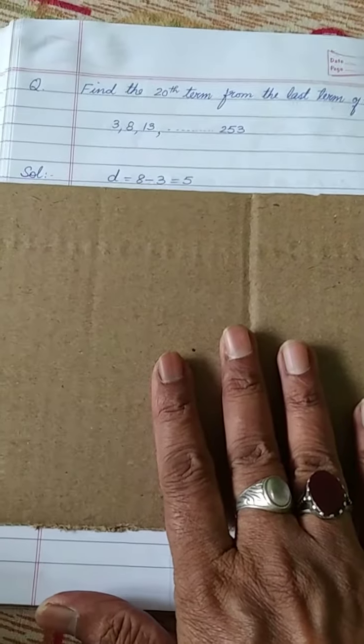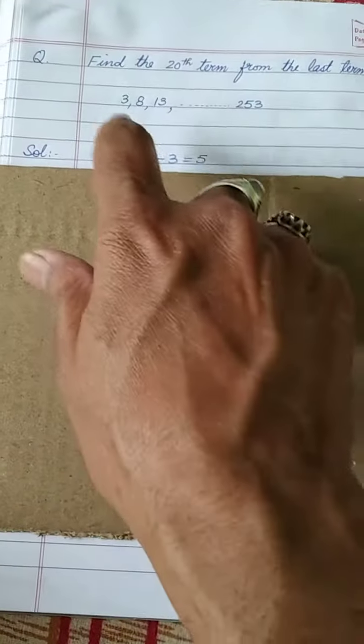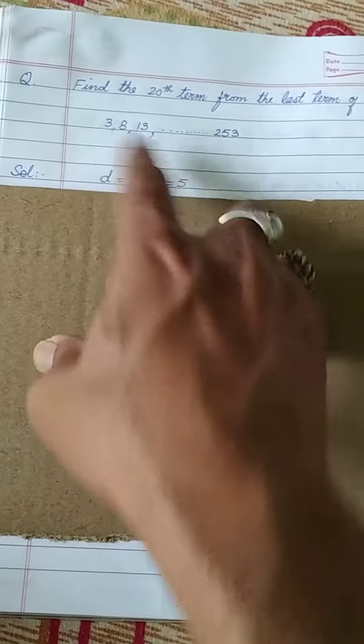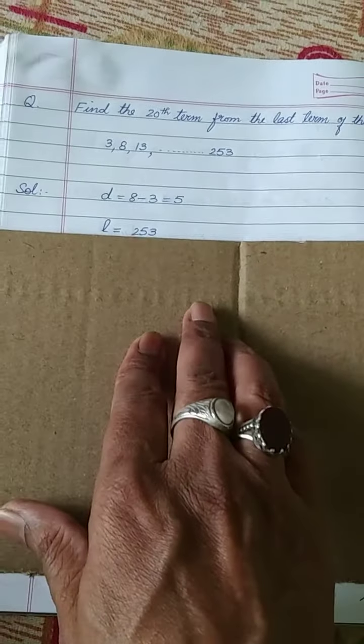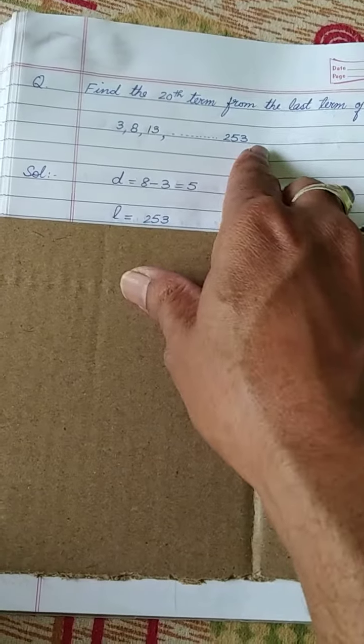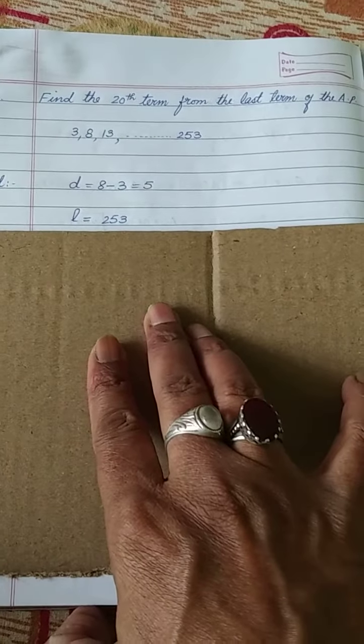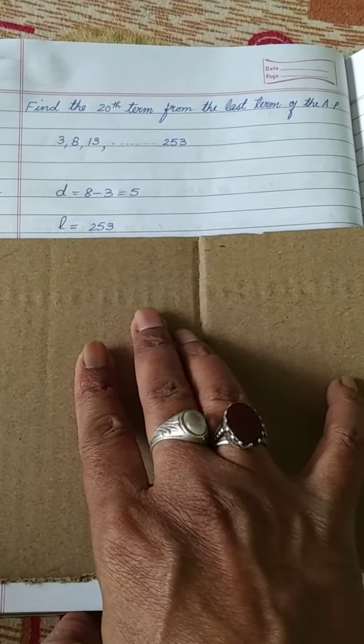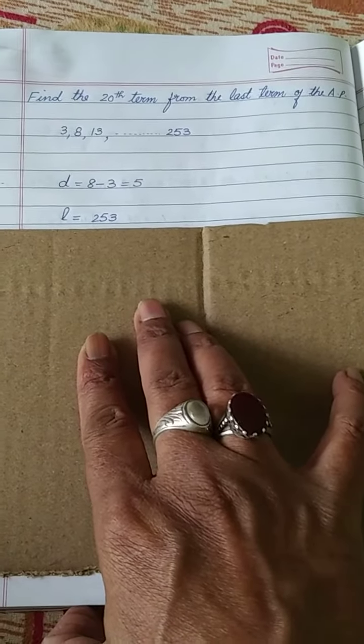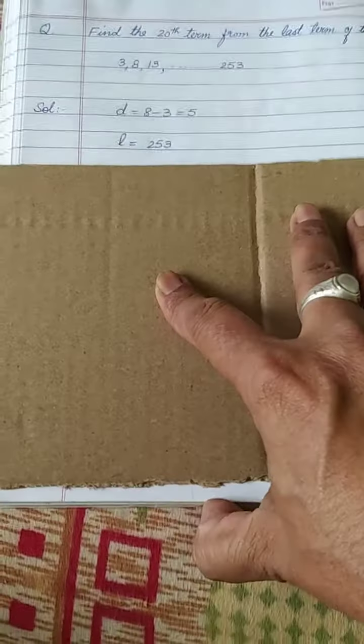So see here, first of all we will calculate its common difference. So it will be 8 minus 3 is equal to 5. Now here, last term is given 253. If we have to calculate any term starting from the last, then we will have to use this formula.